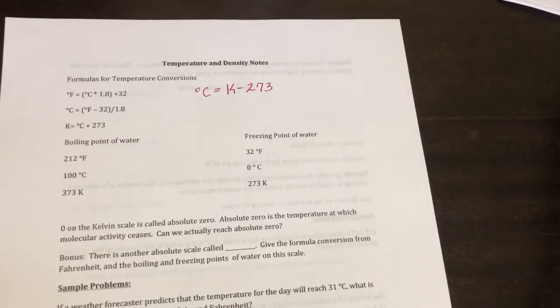Okay, so water boils in Fahrenheit at 212. It freezes at 32 Fahrenheit. It boils at 100 degrees Celsius, freezes at 0 degrees Celsius, boils at 373 Kelvin and it freezes at 273 Kelvin.